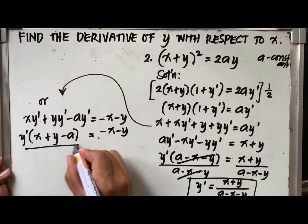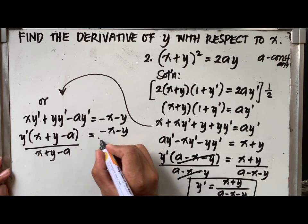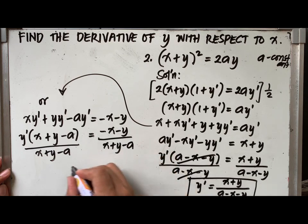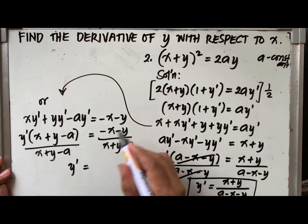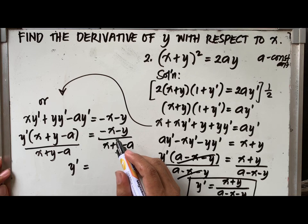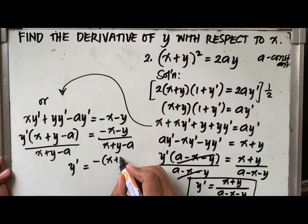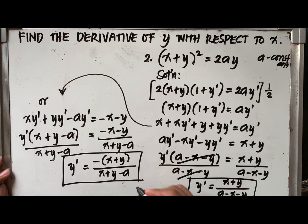giving us y prime times the quantity x plus y minus a equal to negative x minus y. Now, solving for y, we divide both sides of the equation by x plus y minus a. Now, we have this final answer, y prime, equal to negative of the quantity x plus y all over x plus y minus a.